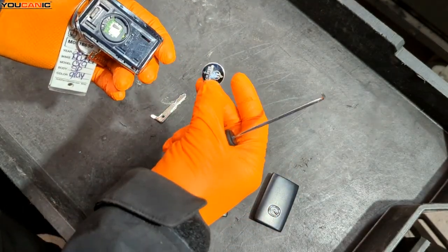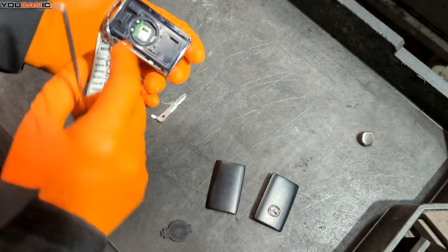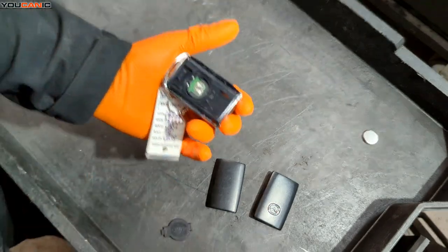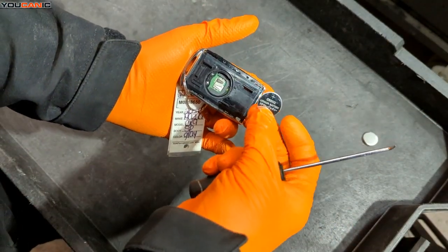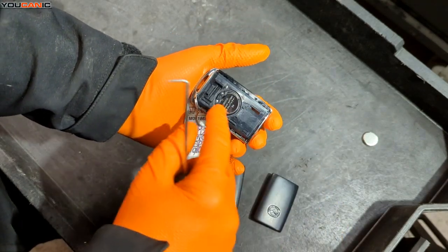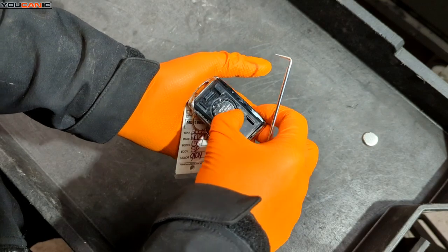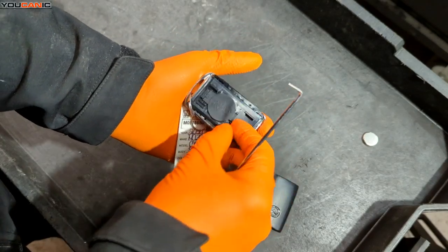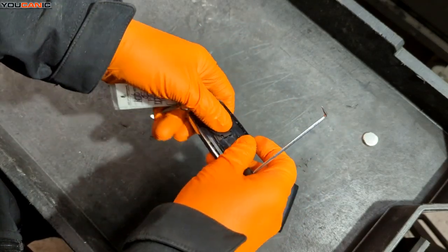There we go, so we pop our battery out by pressing it that way because it's got a little spring on this side. We have our new battery here, the 2032, and then put the plus side up and then put that little tab in there.